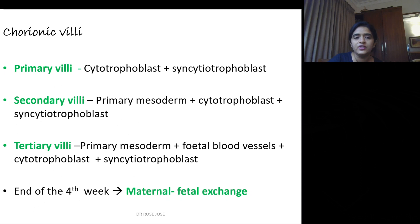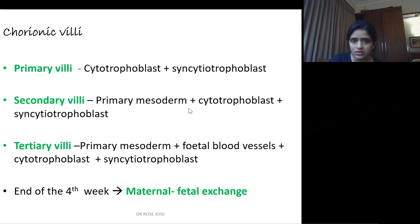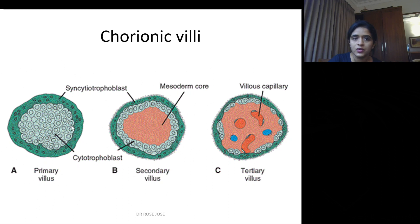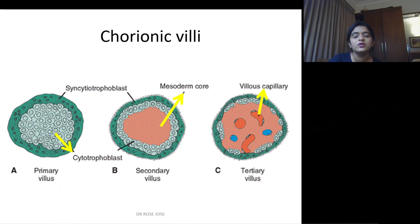Chorionic villi: from the chorionic villi the placenta is fully developed. You have primary villi, secondary villi, and tertiary villi. Primary villi is just cytotrophoblast and syncytiotrophoblast. If you get the primary mesoderm as the core, you call it secondary villi. If this primary mesoderm is invaded by fetal blood vessels, you call it tertiary villi. By the end of the fourth week, maternal-fetal exchange is established. So: cytotrophoblastic core, mesodermal core, and fetal blood vessel core.